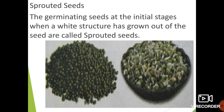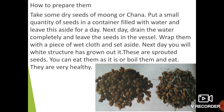Now let us learn about sprouted seeds. Germinating seeds are at the initial stage when a white structure has grown out of the seed — they are called sprouted seeds. To prepare them, take some dry seeds of moong or channa, put a small quantity in a container filled with water and leave it aside for a day. Next day, drain the water completely, wrap the seeds with a piece of wet cloth and set aside.